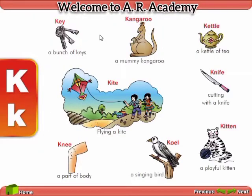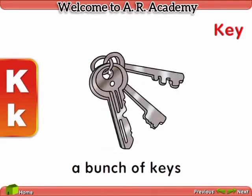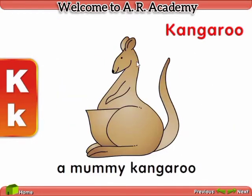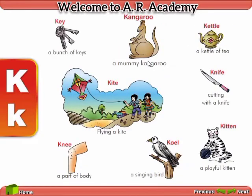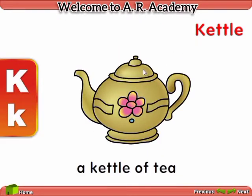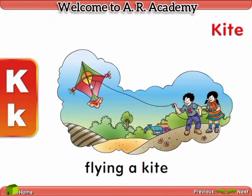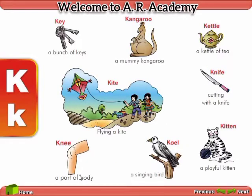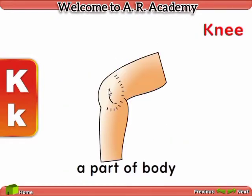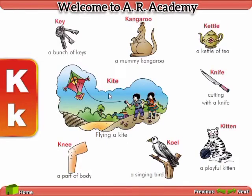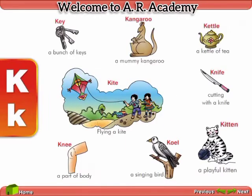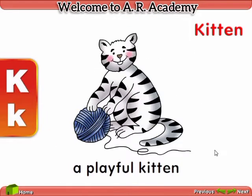K. Key. A bunch of keys. Kangaroo. A mummy kangaroo. Kettle. A kettle of tea. Kite. Flying a kite. Knife. Cutting with a knife. Knee. A part of the body. Koel. A singing bird. Kitten. A playful kitten.